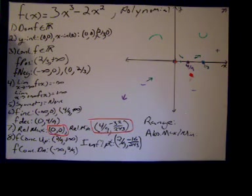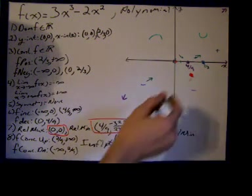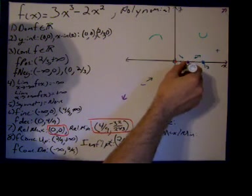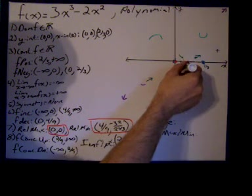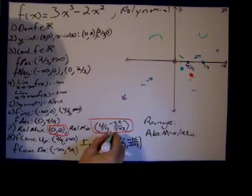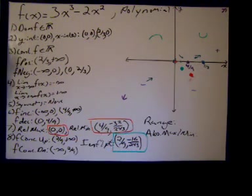And then our inflection point is 2/9, negative 16 over 243, which is going to be approximately right. It's going to have to be right here. And I'll mark that in green so that we can kind of see that. And now we can connect all the dots and I'm trying to decide what color to do it in so that we can kind of see things.